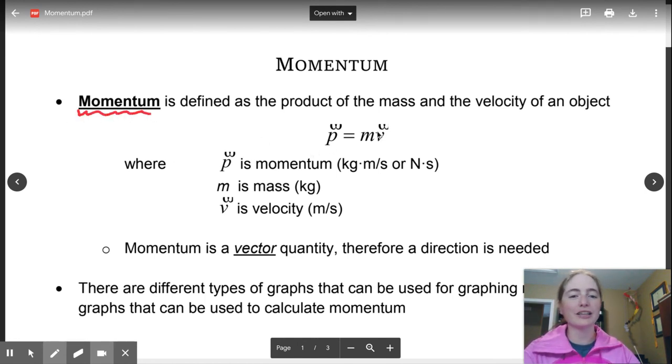So momentum is defined as the product of the mass and the velocity of an object. And one of the things that's cool about momentum is that it is also heavily linked to Newton's first law, the law of inertia.